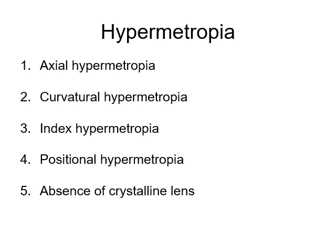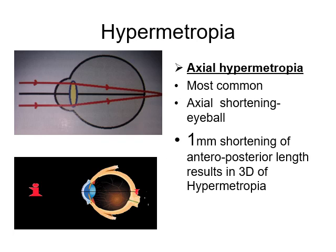The types of hypermetropia are axial hypermetropia, curvature hypermetropia, index hypermetropia, positional hypermetropia, and absence of crystalline lens, which is also a hypermetropic state of refractive error called aphakia. It can be traumatic aphakia or surgically removed crystalline lens. Axial hypermetropia is the most common. There is an axial shortening of the eyeball — 1 mm shortening of the anterior-posterior length results in 3 diopters of hypermetropia.